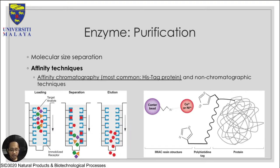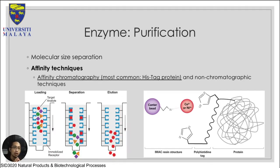Enzyme purification involves molecular size separation - we are looking at a very microscopic technique, very small and very minor, looking at a very detailed aspect of the separation. Affinity chromatography, most commonly shown here as the histag protein example, and non-chromatographic techniques which we will discuss later.